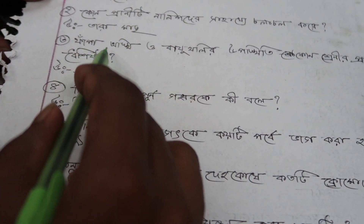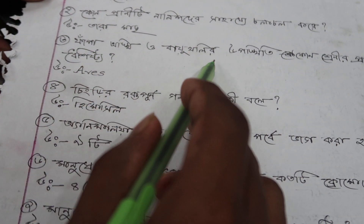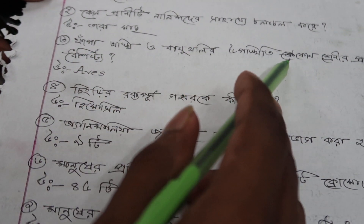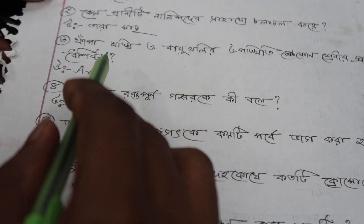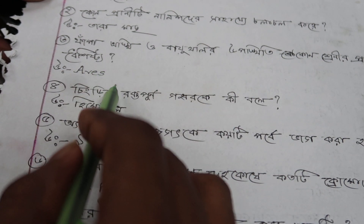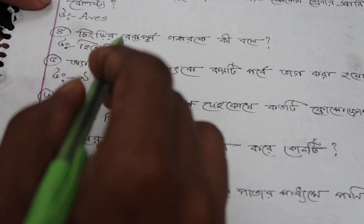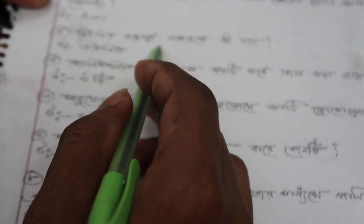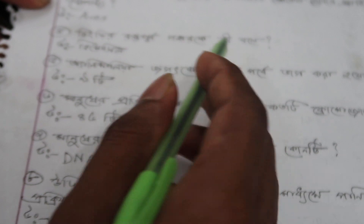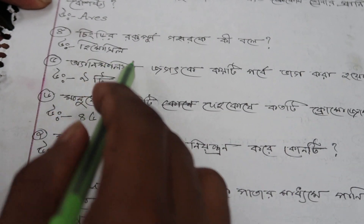Number 3: Phapaosthi O Baiothalir Uphosthiti, Konsrenir Pranirboshishto — answer: Abis. Number 4: Chingri Rokhtapurna Ghaobar Ki Ki Bole? Answer: Himosil.